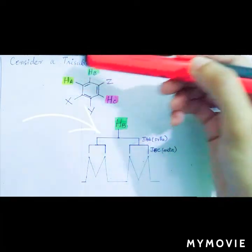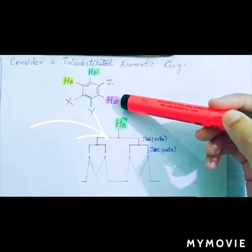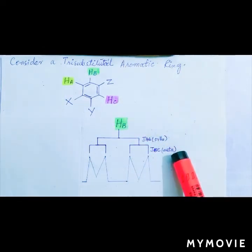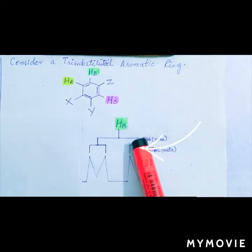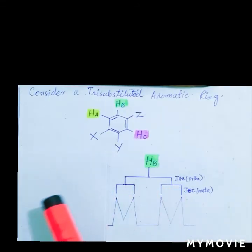For HA, it will show ortho splitting with a wider J value between 6 to 10 hertz. And HB will show splitting with HC with a value between 1 to 3 hertz.